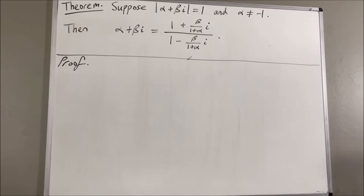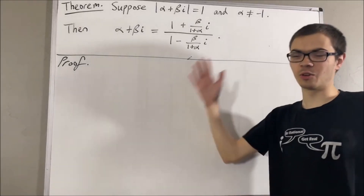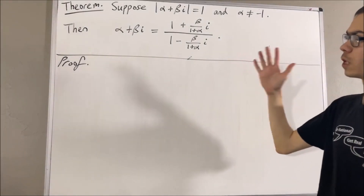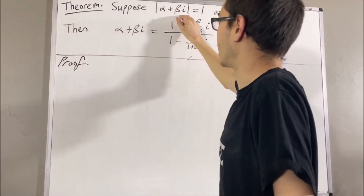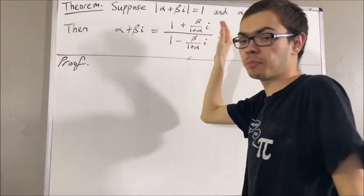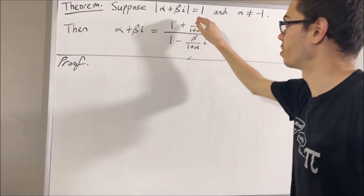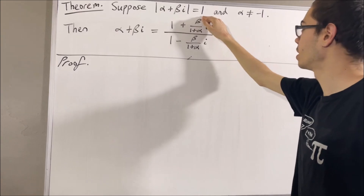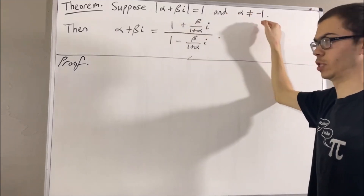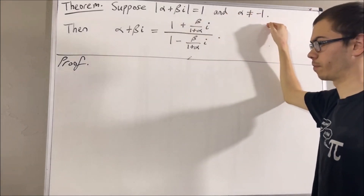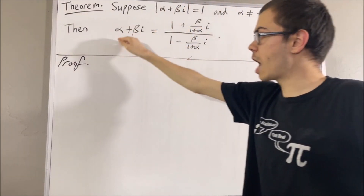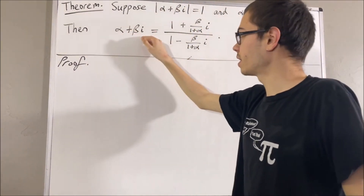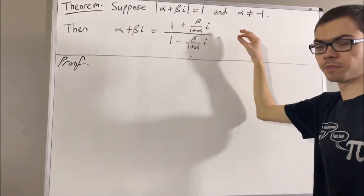Hello! In this video, we are going to prove the following theorem. Suppose alpha plus beta i is a complex number with magnitude 1, whose real part is not equal to negative 1. Then, alpha plus beta i is equal to this expression.